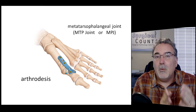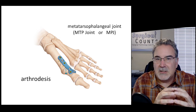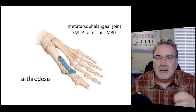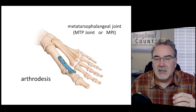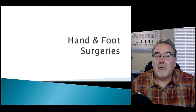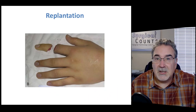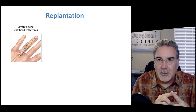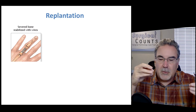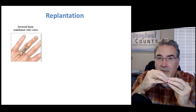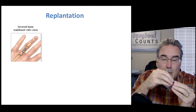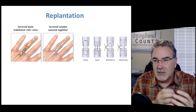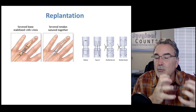In finger replantation, when a finger has been cut off and we want to replant it, we start in the center and work our way out. First we bring the bone together, reduce the fracture, and use sutures or plates to hold the bone in place. Then we work on the tendons right around the bone, bringing the tendons together and suturing them using specialized suturing methods to hold them tight.